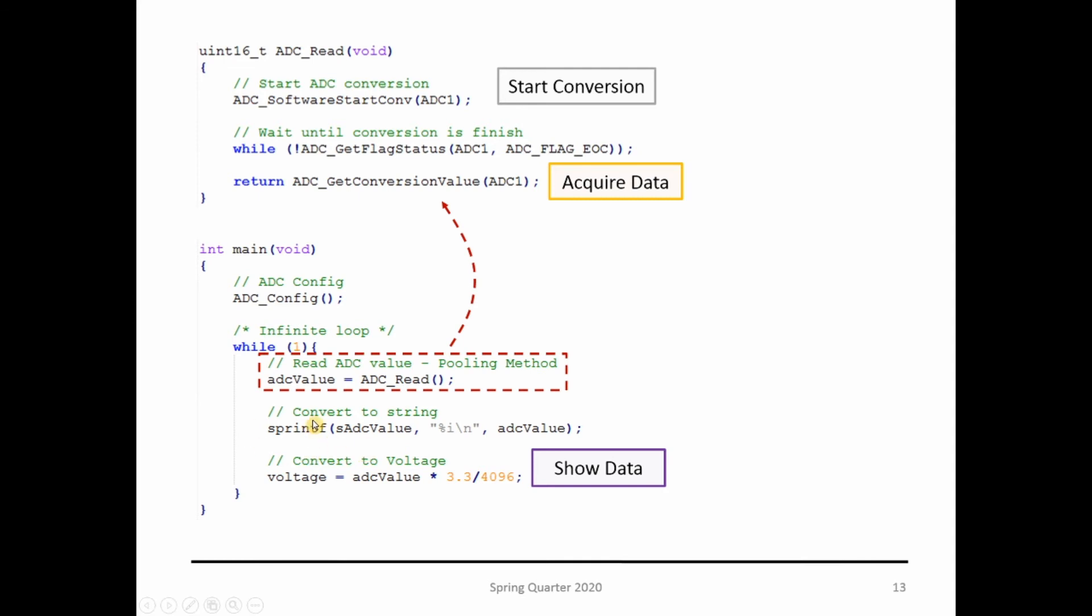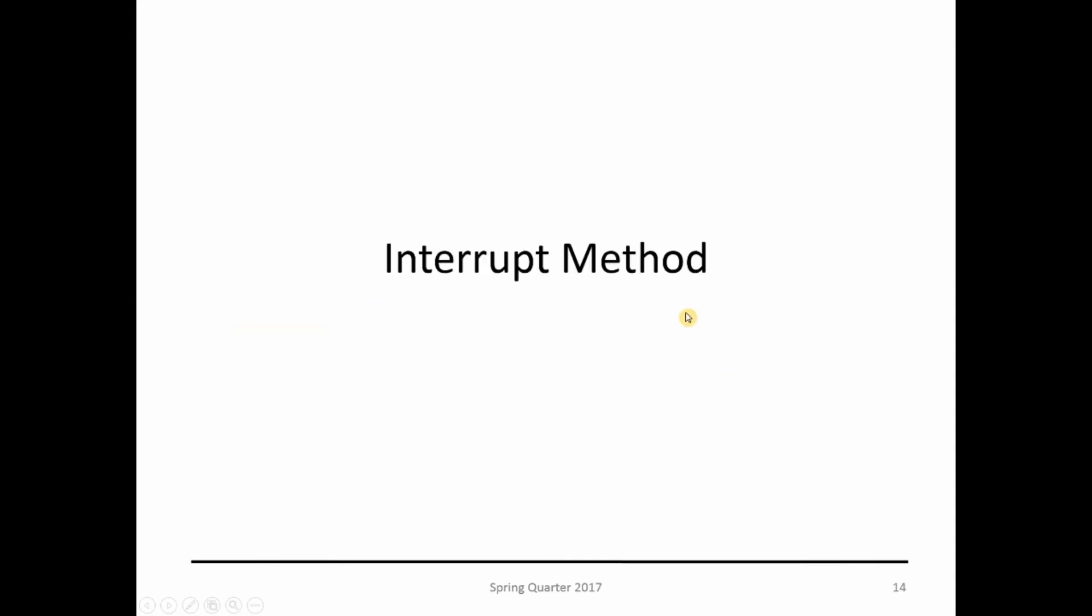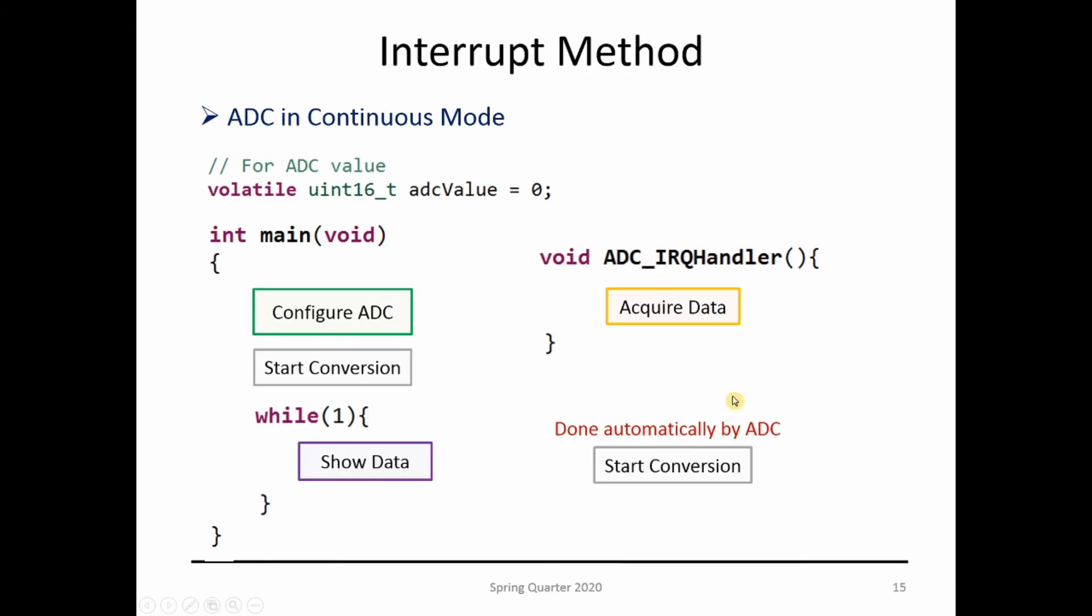Let's go over the interrupt method. The interrupt method works as follows: we have our main, we parameterize the ADC, start the conversion just the first time, then stay in the while loop showing the data. Whenever the interrupt routine happens on your ADC, I acquire the data. In this case, the next start conversion is done automatically by the ADC since I'm using continuous mode. The way the main and ADC communicate is using a volatile variable, in this case ADC_value.